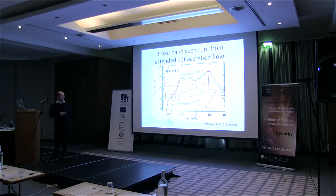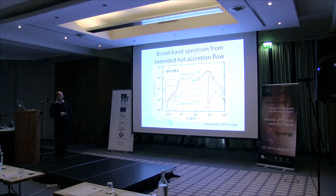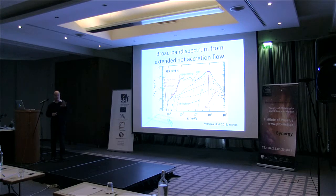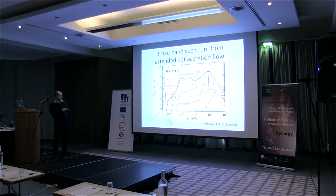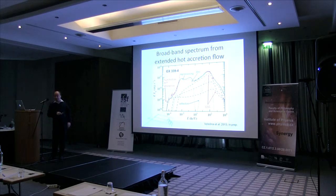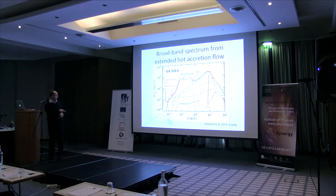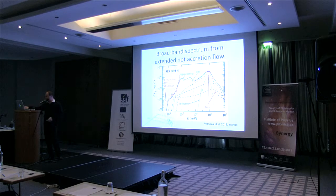The model does work. For GX 339-4, fitting the data from mid-infrared through optical, UV, X-rays, and the 100 keV cutoff, three components from different zones of the hot accretion flow are used. The largest zone produces mid-infrared emission via synchrotron, while there is also an irradiated accretion disc producing UV emission. This is a fit by eye, but it demonstrates that the model can easily explain the infrared and optical points. The jet can also contribute somewhere in the infrared, but it is very difficult to decompose from this kind of data.